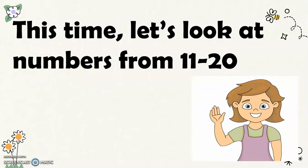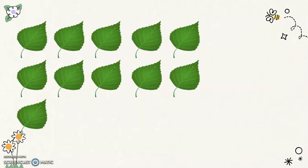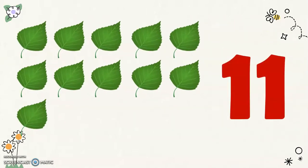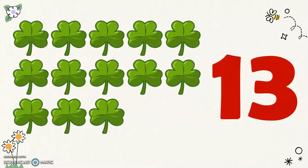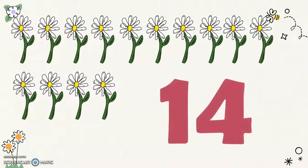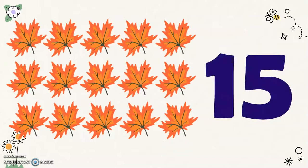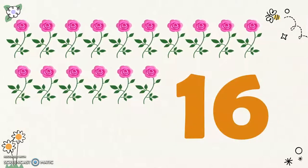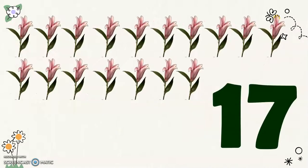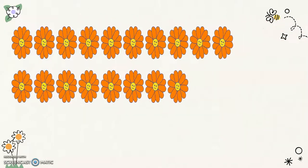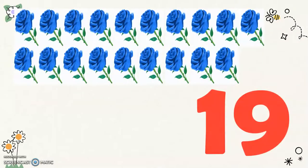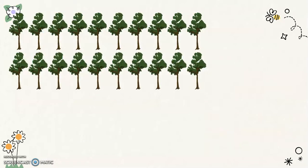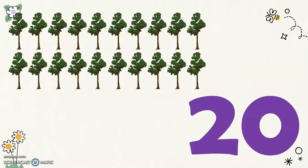Now let's look at numbers from eleven to twenty. We have here eleven leaves, twelve flowers, thirteen clover leaves, fourteen flowers, fifteen maple leaves, sixteen roses, seventeen flowers, eighteen flowers, nineteen blue roses, and twenty trees.